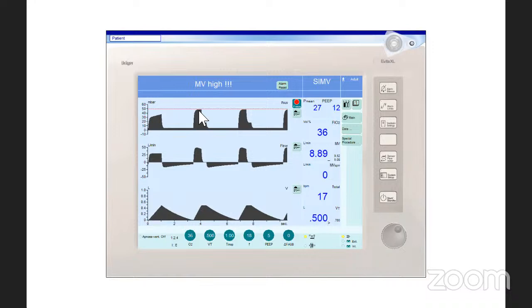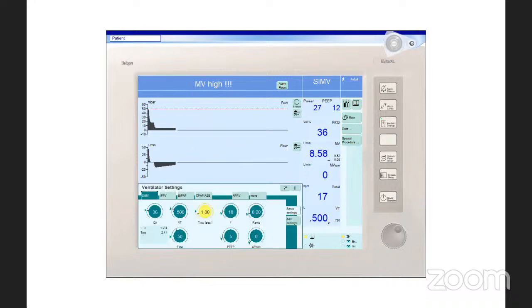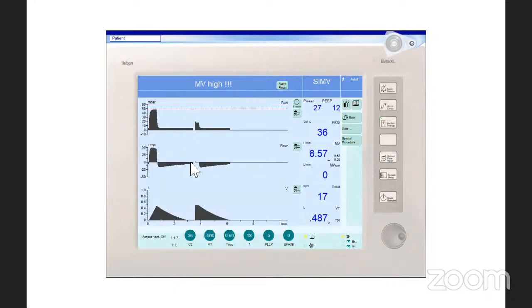But as we increase the flow, we were able to deliver the volume faster. But since we did not change the inspiratory time, all what we gained is the plateau time again. So what we need to do is to go down on the inspiratory time and confirm, so we get rid of the plateau time again. You can see that we improved the auto-PEEP remarkably. However, it's not completely resolved.